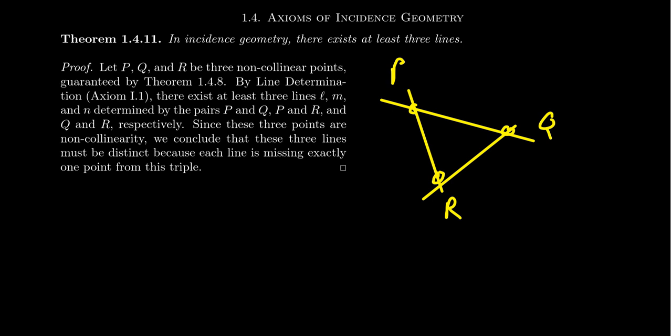None of these lines can be the same line because if any of them were the same line, then that means all three points would have to be on the same line, they'd be non-collinear. So that would violate theorem 1.48 in our lecture series. Theorem 1.48 required point existence, non-colinearity, and line determination. This theorem also uses line determination. So we've used those three axioms and this proves the dual of point existence. This gives us line existence.